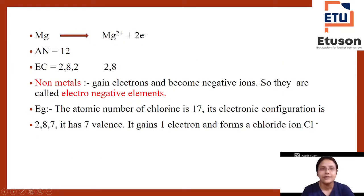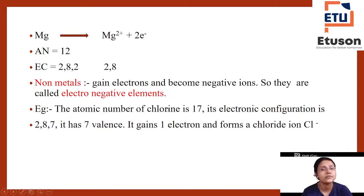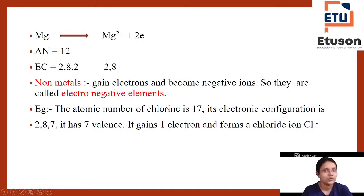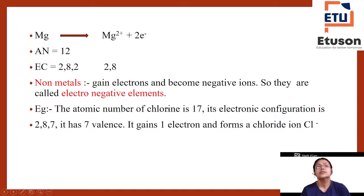Now for magnesium: its atomic number is 12, so its electronic configuration is 2, 8, 2. This is the property of metals — they are electropositive because they lose electrons to become positive ions, forming cations.